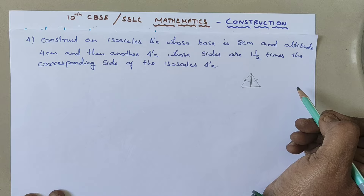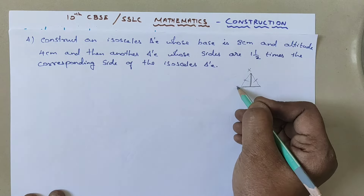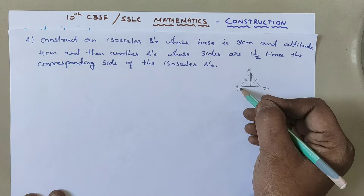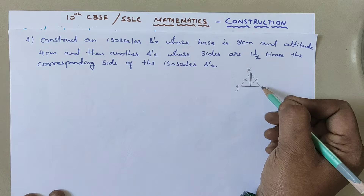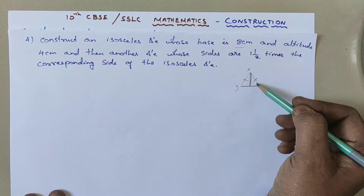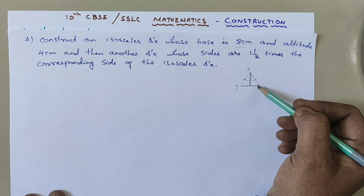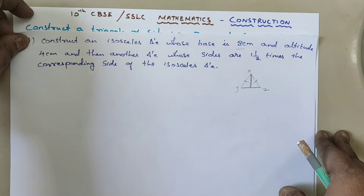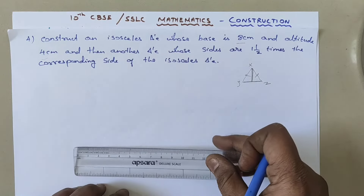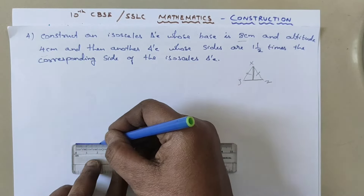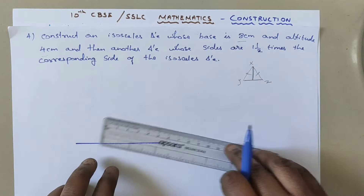Now I am going to construct isosceles triangle X, Y and Z, where side XY is equal to XZ. But we don't know the side measurement — we know only the base and the altitude. Altitude is the perpendicular height of the isosceles triangle. So first, draw a straight line of 8 cm.